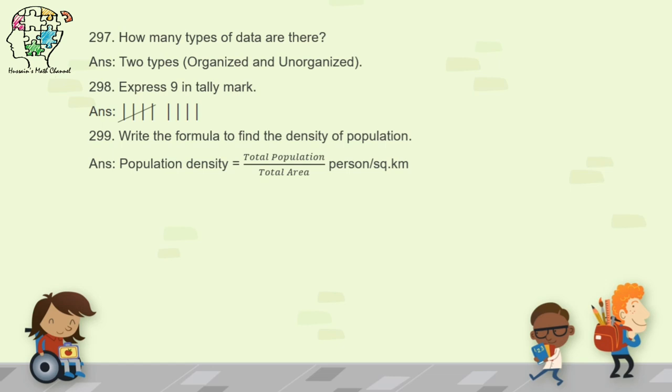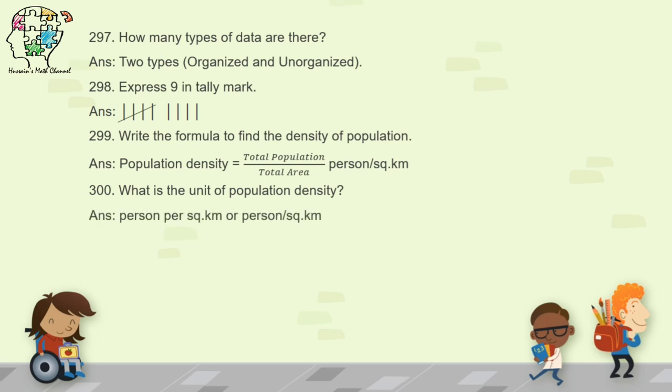Question 300: what is the unit of population density? As in the previous question, the unit is person per square kilometer. You can also write it in short form as person/km².